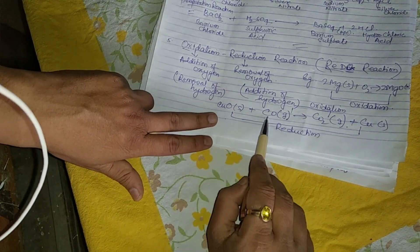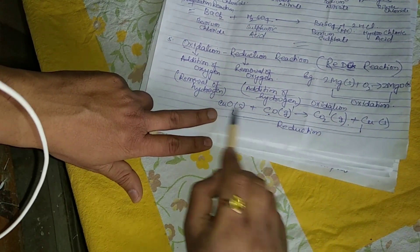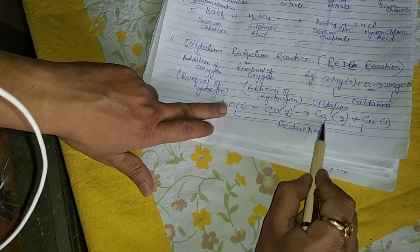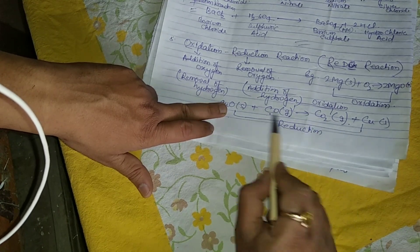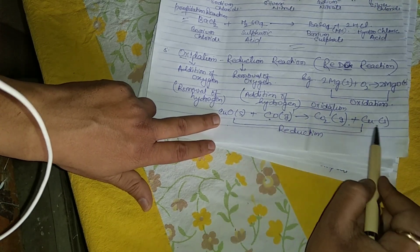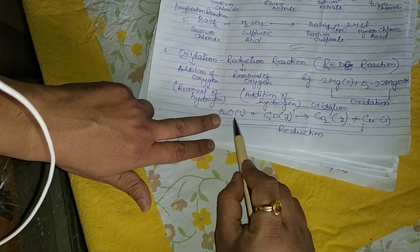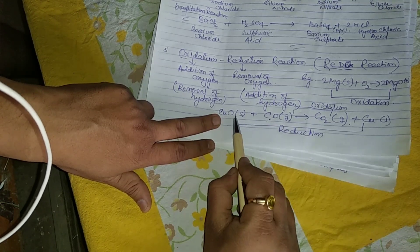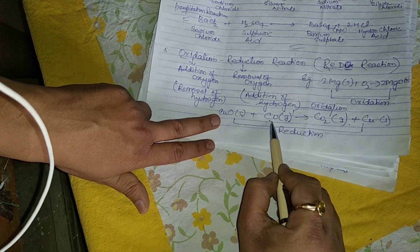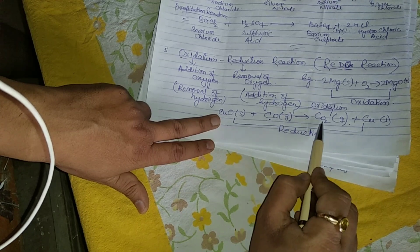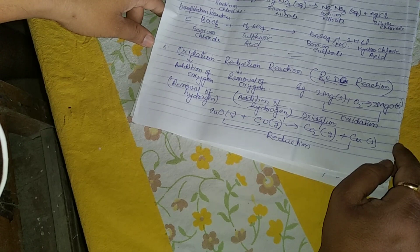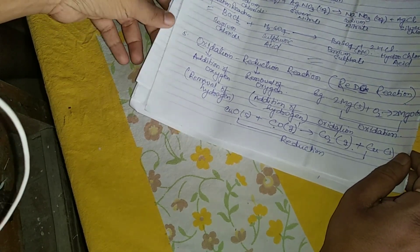Here is an example: copper oxide (CuO) plus carbon monoxide (CO) — the oxygen from CuO combines with CO to form carbon dioxide (CO2), and CuO becomes solid copper. Reduction occurs for copper oxide because oxygen is being removed from it. Oxidation occurs for carbon monoxide because oxygen is being added to it, forming CO2. This is a redox reaction — learn this example.